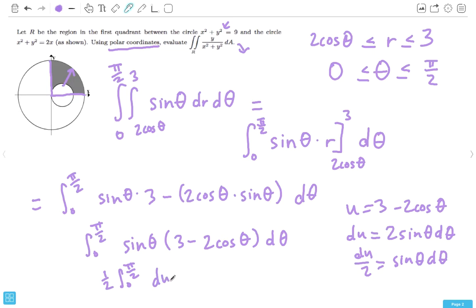Now, kind of running out of room here. But, we've got du, and since we've changed out what our function is, we also have to change these bounds. So, don't ever leave these like this, or else your teacher will actually murder you. So, 3 minus 2 times cosine of pi over 2. This is just going to be 0. So, 3 minus 0 is 3. And for 0, cosine of 0 is 1. Times 2 is 2. 3 minus 2 is 1.